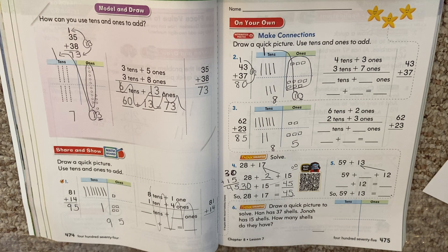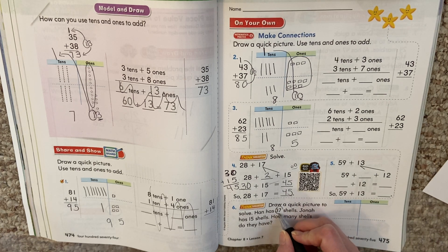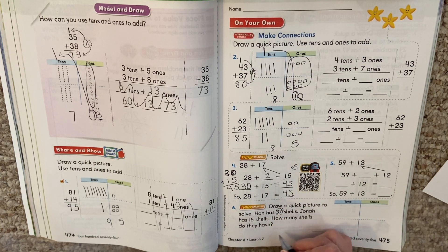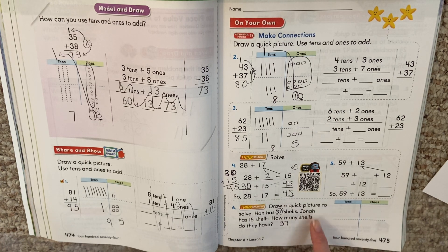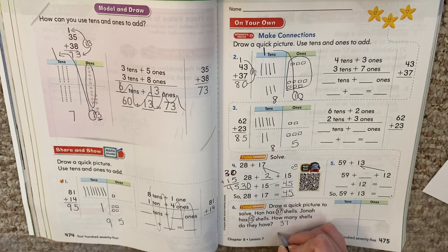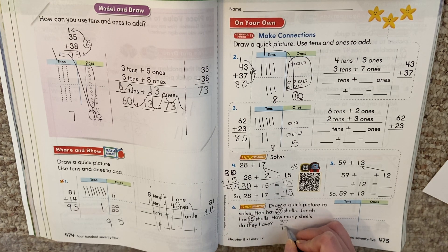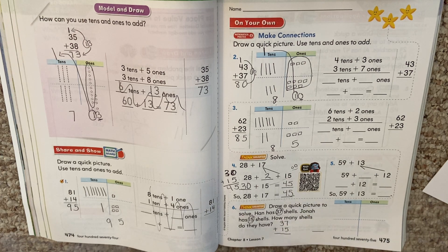It says, draw a quick picture to solve. Han has 37 shells. Jonah has 15 shells. How many shells do they have? So they want to know how many do they have all together. So we have Han who has 37. I can line this up, 37. And Jonah has 15. So it's a good idea to put them one on top of the other. We line up our plus problem.